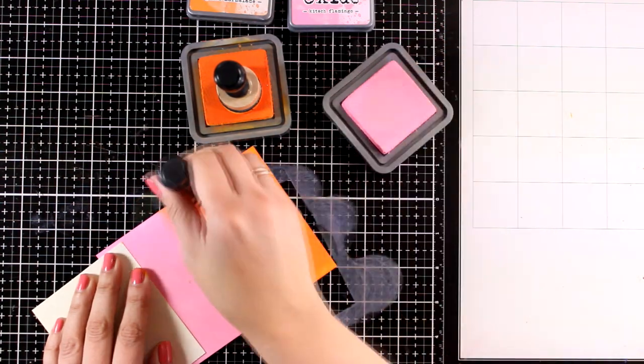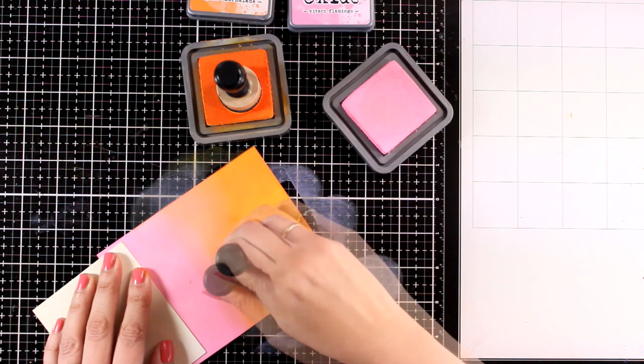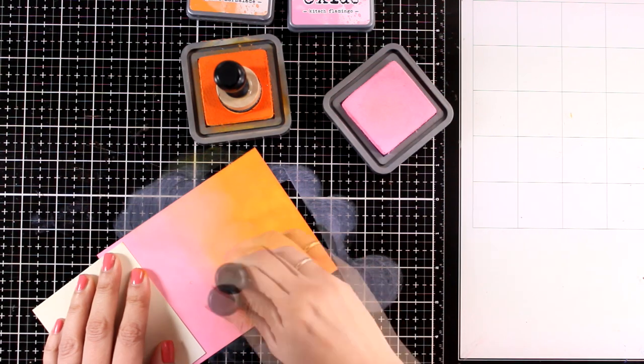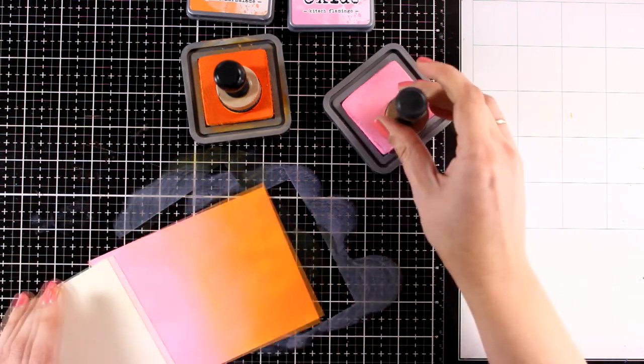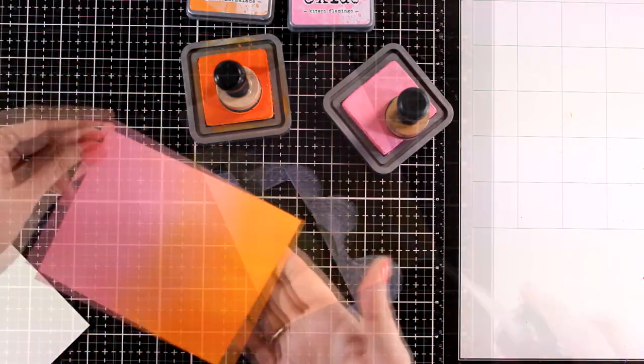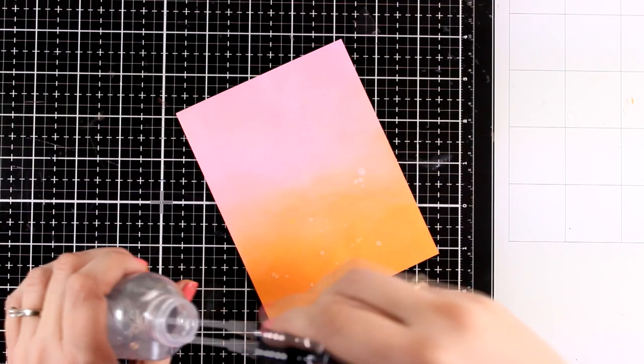The ink kind of stays at the top and then I'm going to blend those two colors together, making sure that I don't have a harsh line. As you can see, I go over that line again and again very lightly and it works just like magic. It is a really stunning background and I absolutely love this color combo.